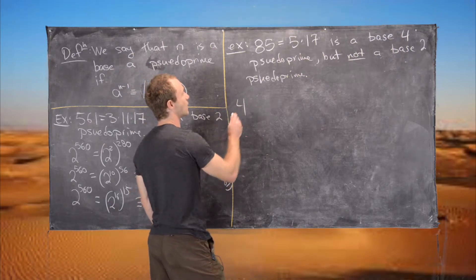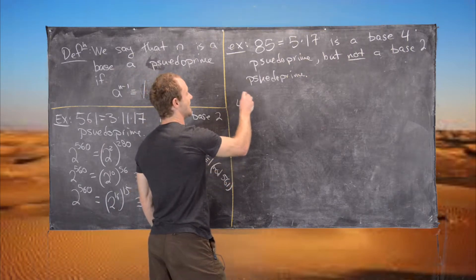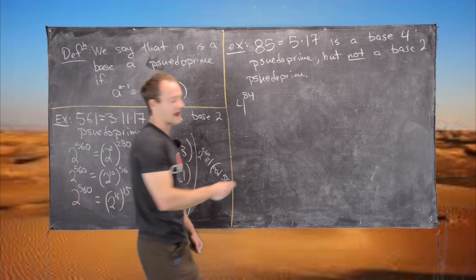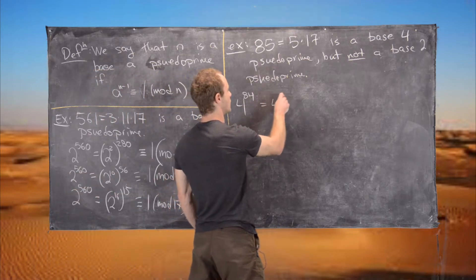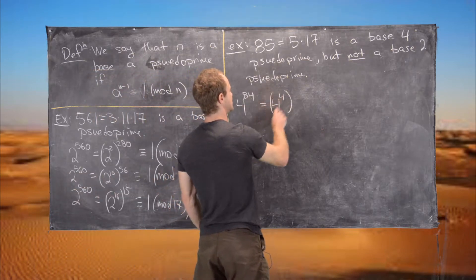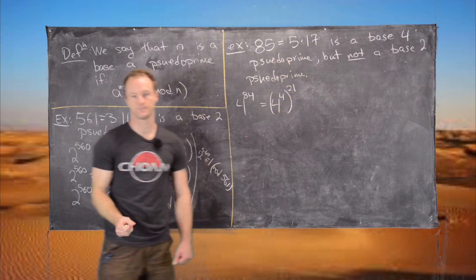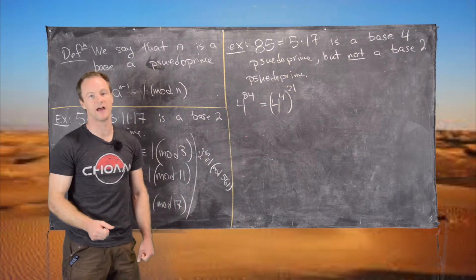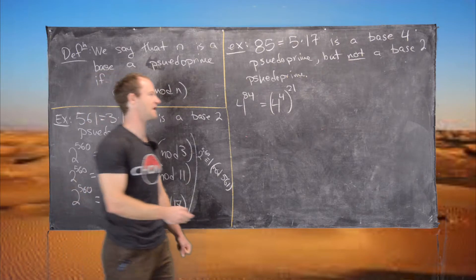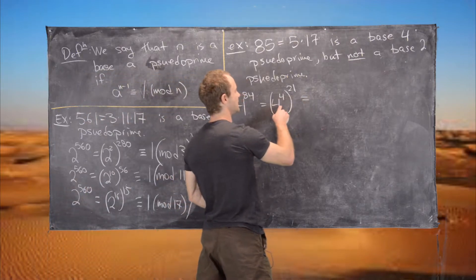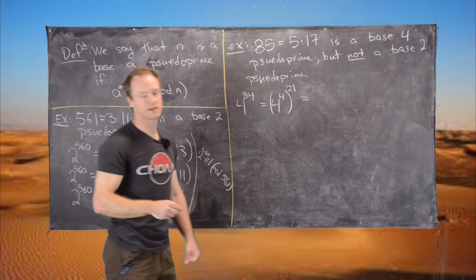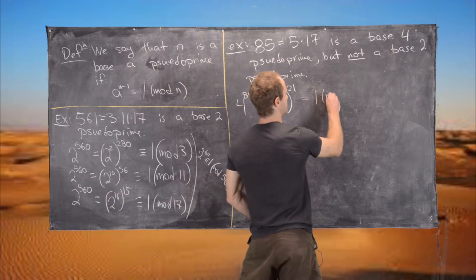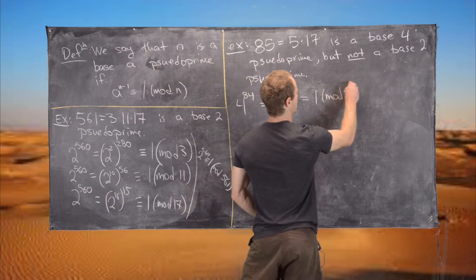Let's take 4 to the 84. We can write that as 4 to the 4, all to the power 21. We know 4 to the 4 is congruent to 1 mod 5 by Fermat's Little Theorem, so this whole thing is 1 to the 21, which is 1 mod 5.